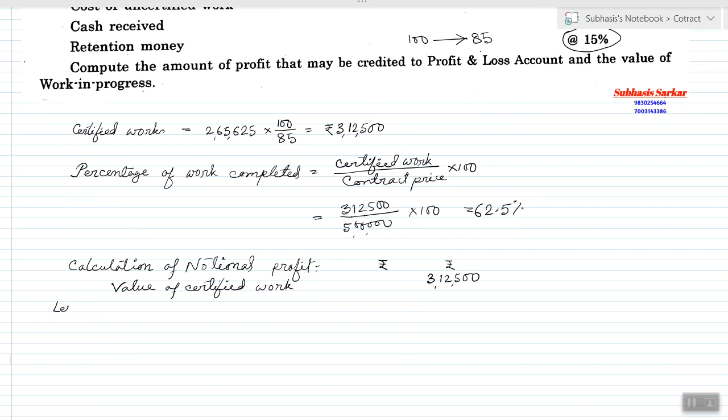Less cost of certified work. Cost of certified work means cost of contract up to date, that is total expenses, which is 2,87,500.